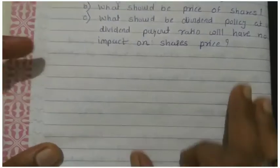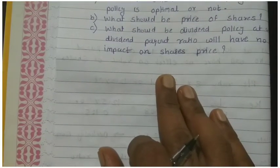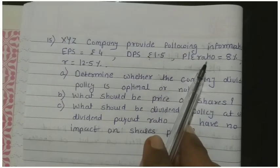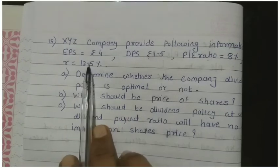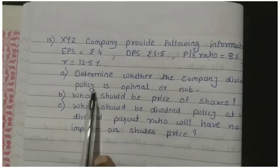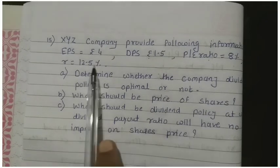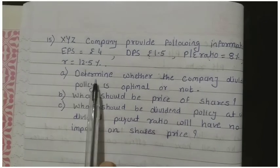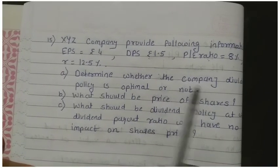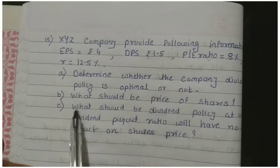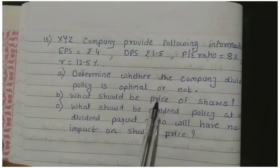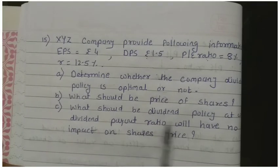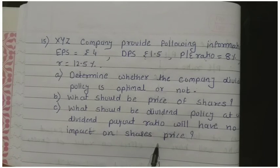Now, 15 number sum is homework. XYZ company provides following information: EPS is given, DPS is given, P/E ratio is given. From P/E ratio you'll get KE, R is also given. First determine whether the company dividend policy is optimal or not by comparing R and KE. Determine whether it is growing firm, declining firm or normal firm. Then determine what should be the price of the share, whichever answer comes, I don't know, you calculate, then we'll do it later. And what should be the dividend policy at which dividend payout ratio will have no effect on the price of the share.